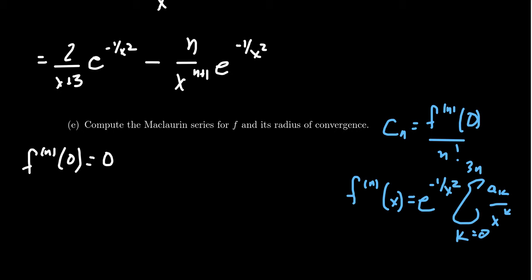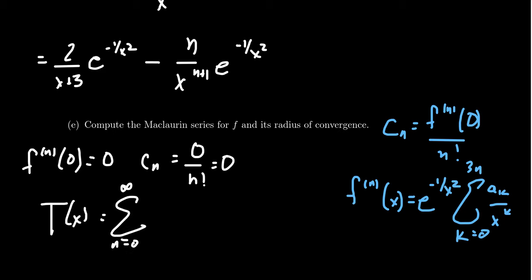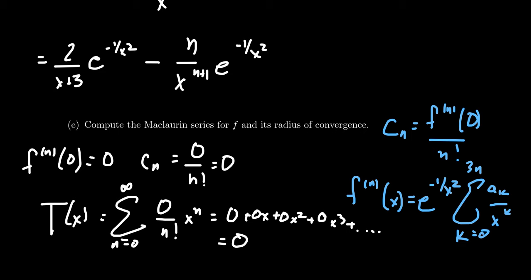That's the key observation. Therefore c_n equals zero over n factorial, which is always zero. When you look at the Maclaurin series T of x, it equals the sum from n equals zero to infinity of zero over n factorial times x to the n — that's just zero plus zero x plus zero x squared, et cetera. This is just the constant function zero. The radius of convergence is infinity, since this is just a constant function.